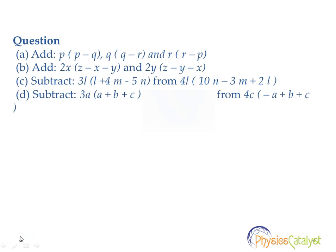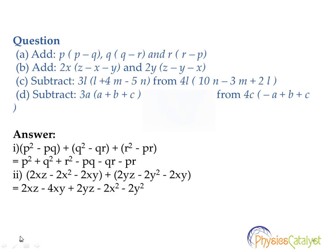Question (c) is a subtraction problem: Subtract 3l(l+4m-5n) from 4l(10n-3m+2l). Question (d) is also a subtraction problem: 3a(a+b+c) has to be subtracted from 4c(-a+b+c).